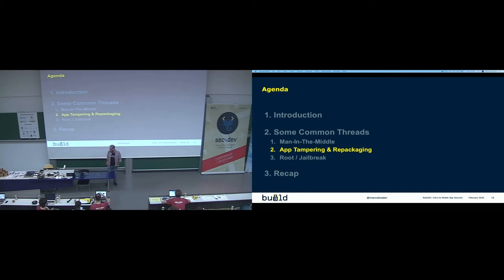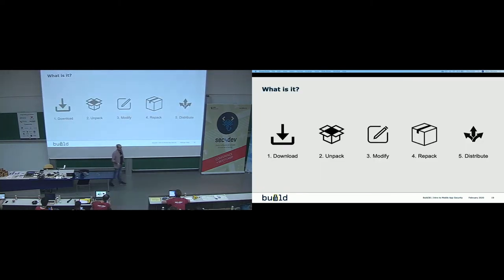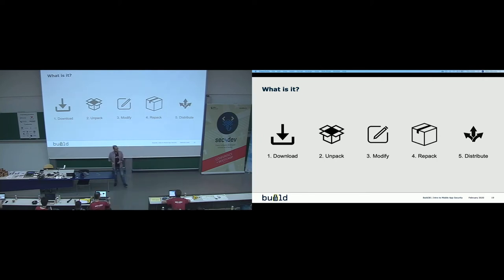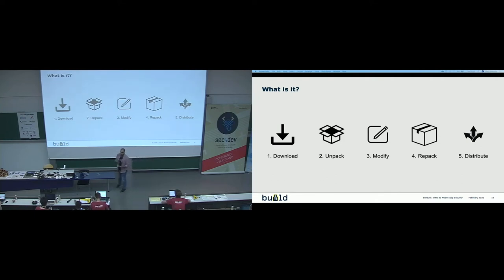The second topic is application tampering and repackaging. When we talk about application repackaging, someone willing to modify our application downloads the app to their workstation, unpacks it — APKs and IPAs are very easy to unpack with free tools — looks inside, does static and dynamic analysis, modifies it for whatever purpose, packs it again, and tries to distribute it. There are side markets like Cydia for jailbroken iOS phones, and they might also distribute through social engineering.